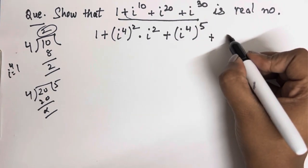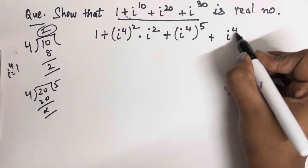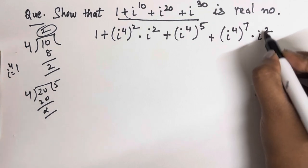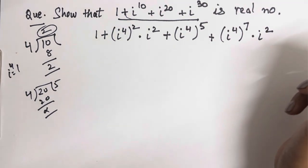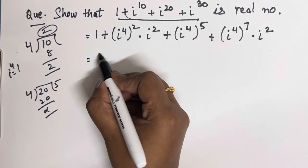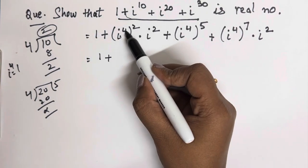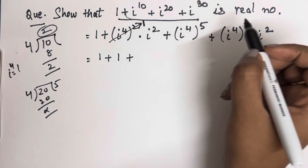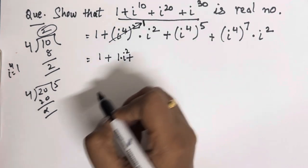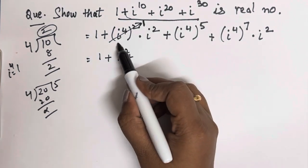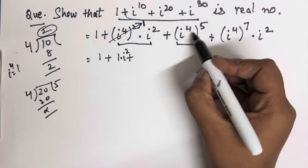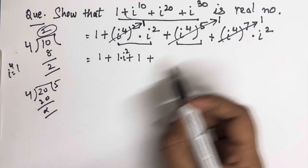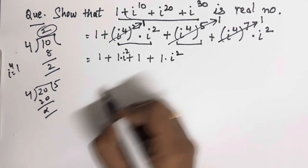Similarly for iota to the power 30: it will be iota to the power 4, whole to the power 7, into iota square, because 2 will be the remainder. Now, iota to the power 4 is 1, and 1 to any power is 1. So this whole part becomes 1, and again this whole becomes 1, so we are left with 1 into iota square.